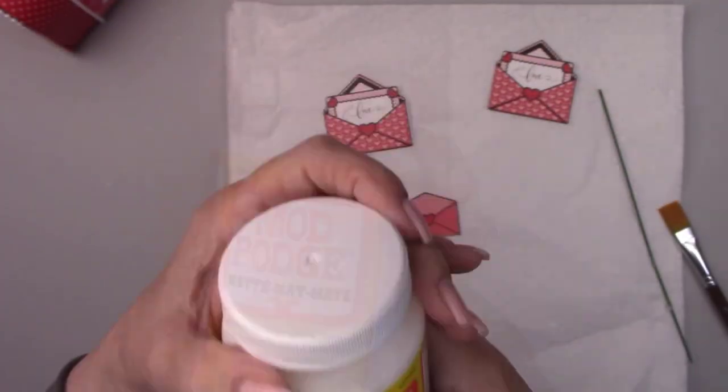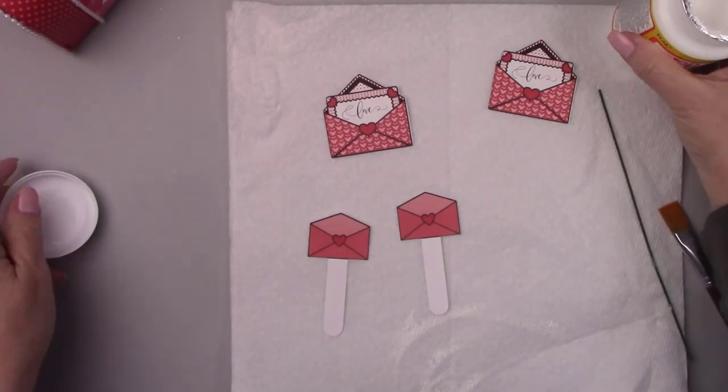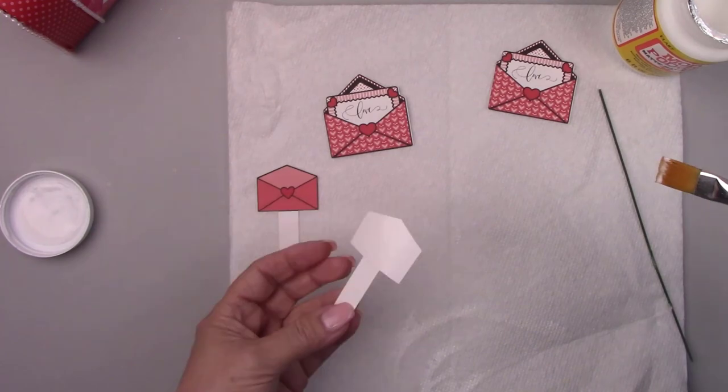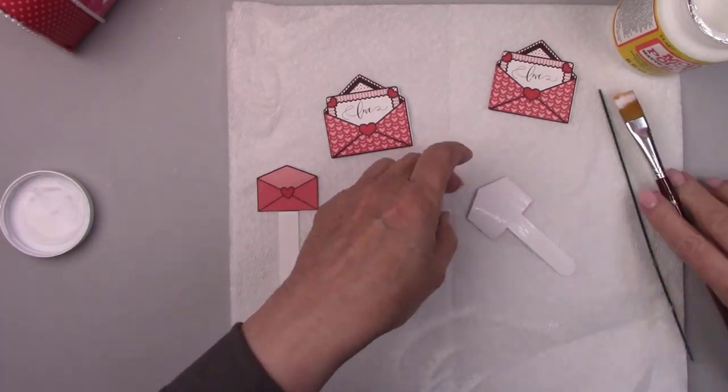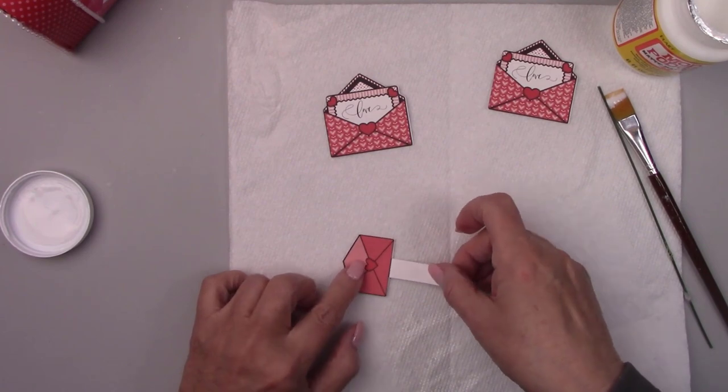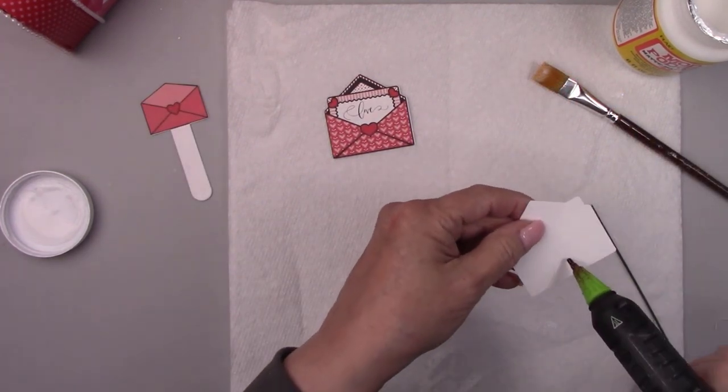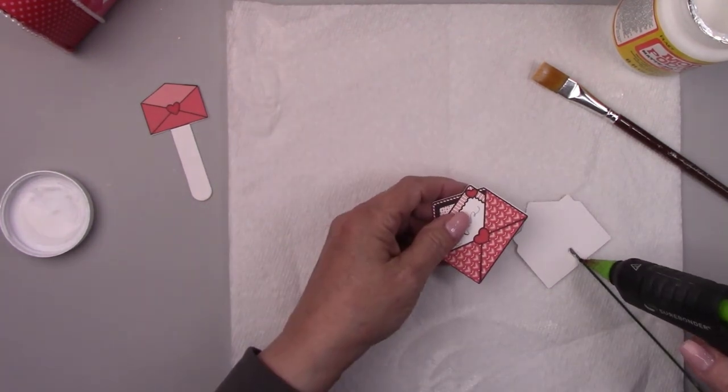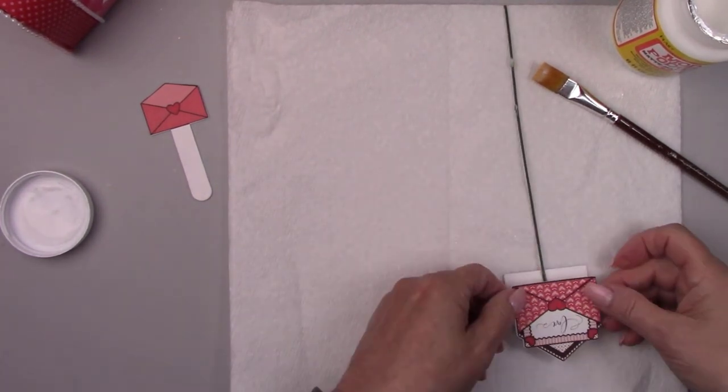And now it's my favorite part. It's time to put it all together. I'm gluing the smaller envelopes together. I want print to show on both sides of these little envelopes, so no matter what angle you look at this project, it has a finished look to it. I'm sandwiching a wire between the two large envelopes and gluing it together with Mod Podge.